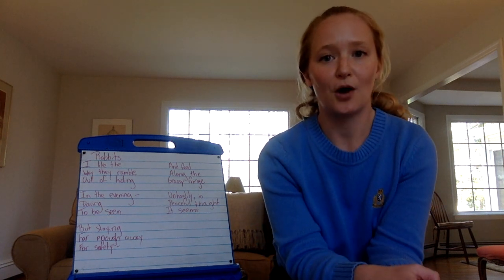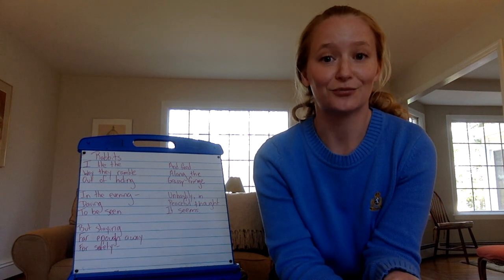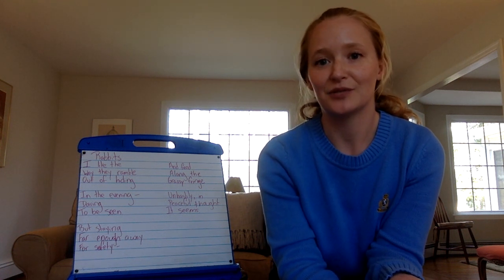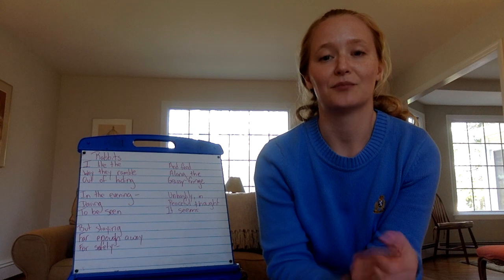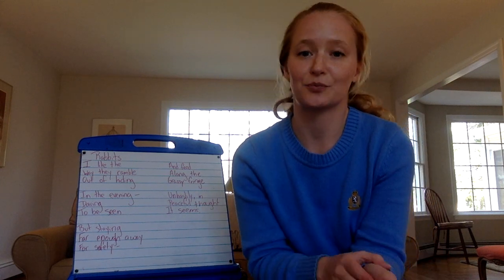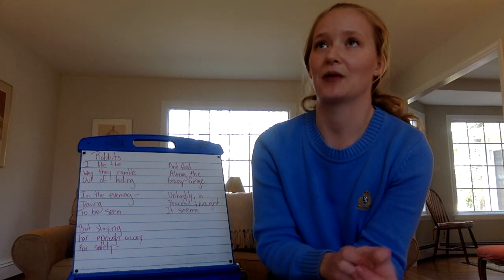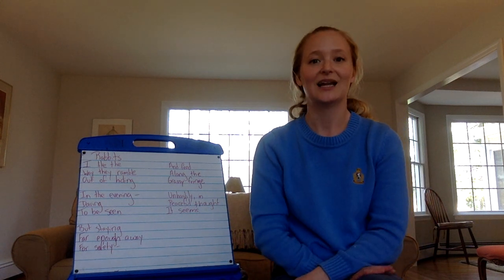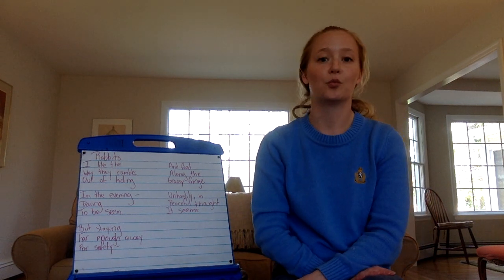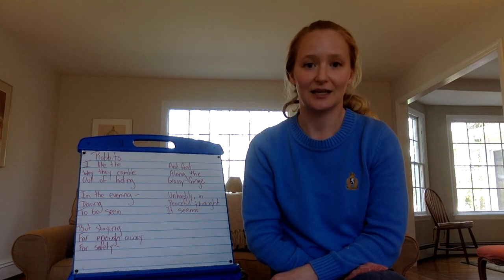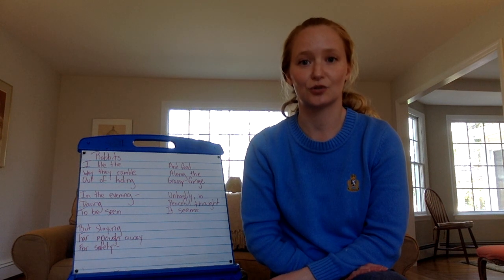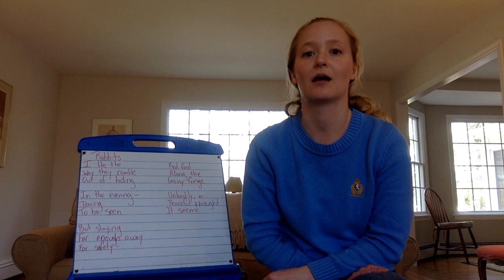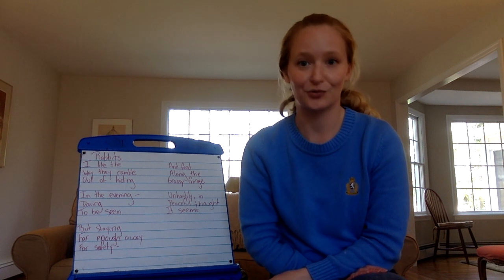So this poet is describing seeing rabbits. And instead of using certain words, they're really diving in and finding the most precise words that sort of bring this poem to life. So I want to read it again. And I want you to really think about what words are you noticing that the poet is using to describe certain actions or feelings or characteristics.